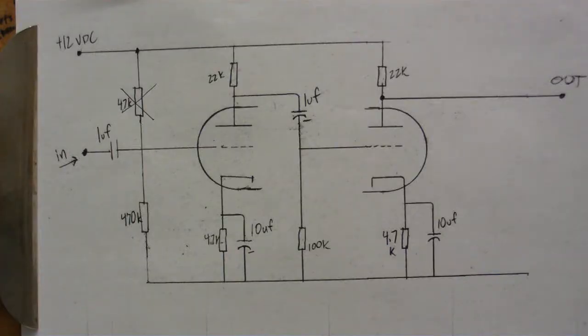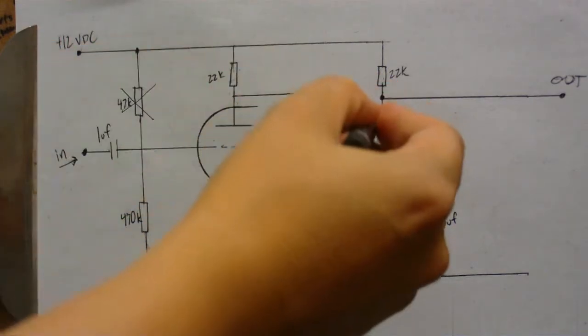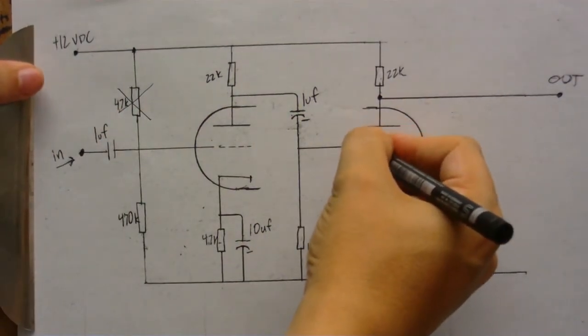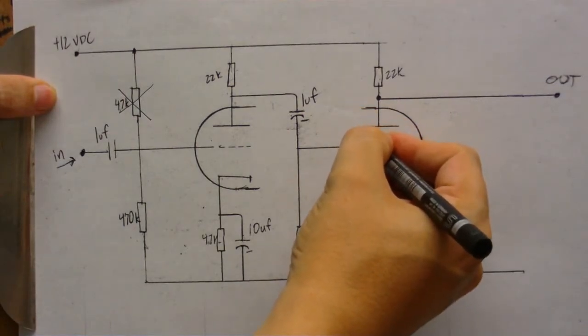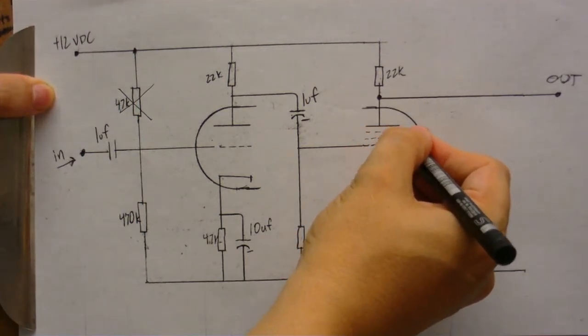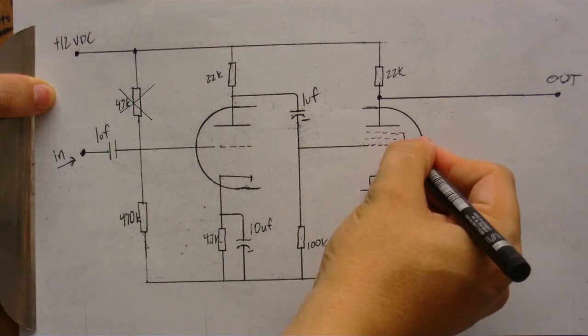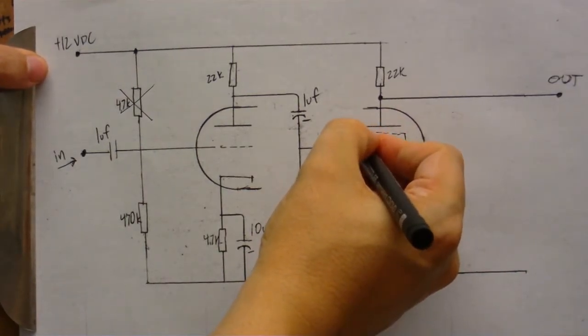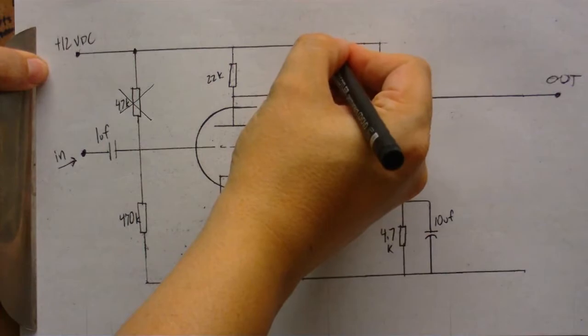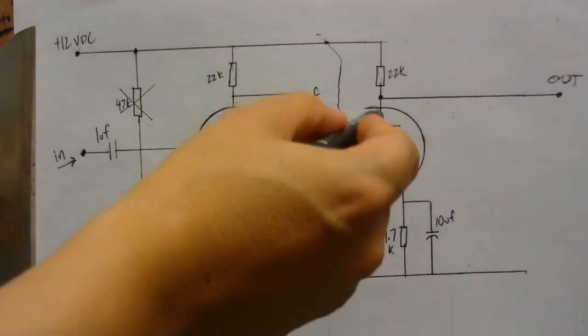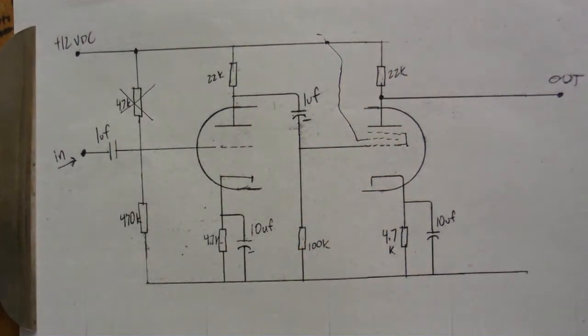Now finally the 12EC8. This one is also a 12 volt high tension tube using the same circuit except I need to make a couple of minor changes since this part of the tube is a pentode instead of a triode. Let's add the grids - a screen grid there and a suppressor grid there. The suppressor grid is internally connected to the control grid. I'm going to connect the screen grid directly to the 12 volt supply.